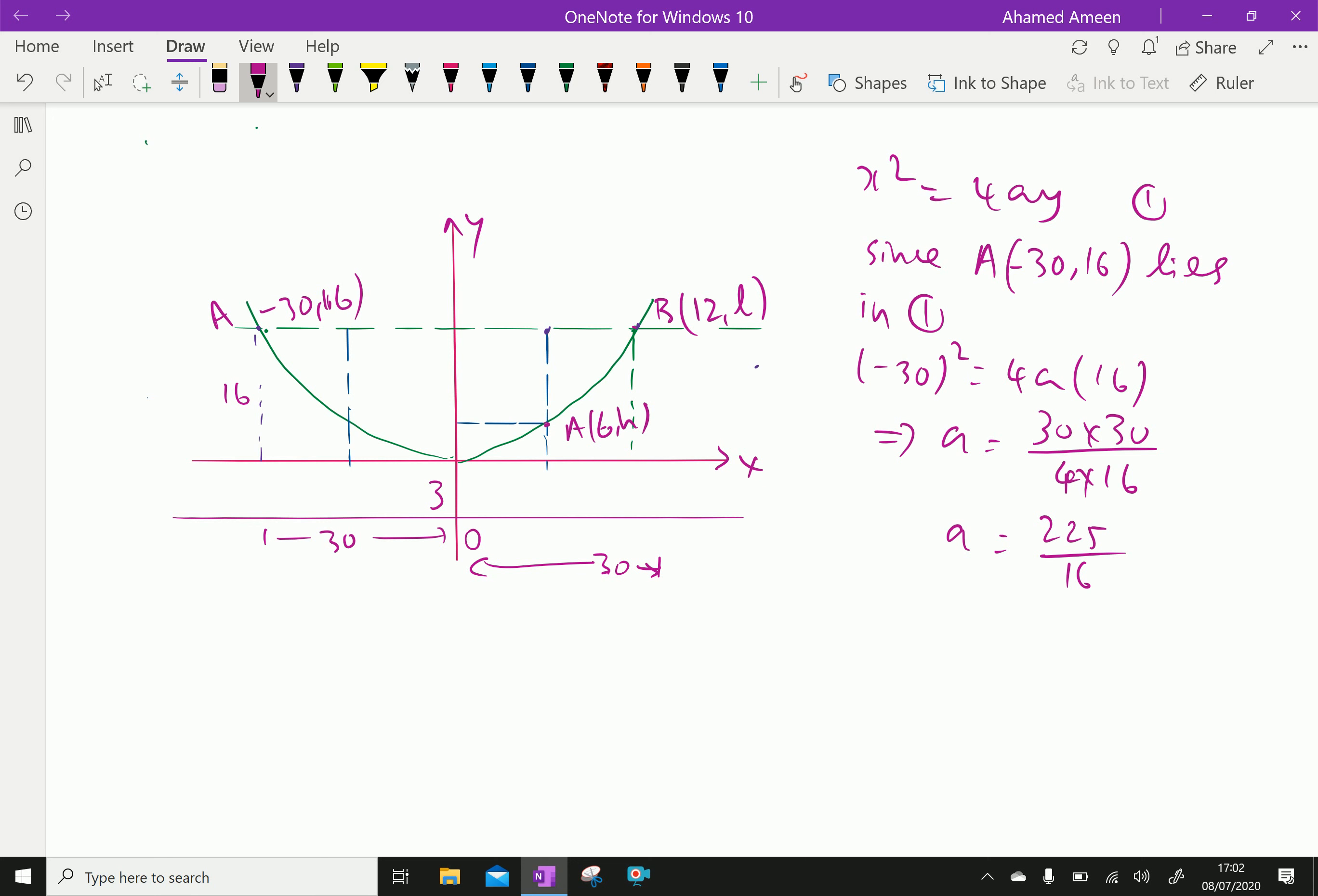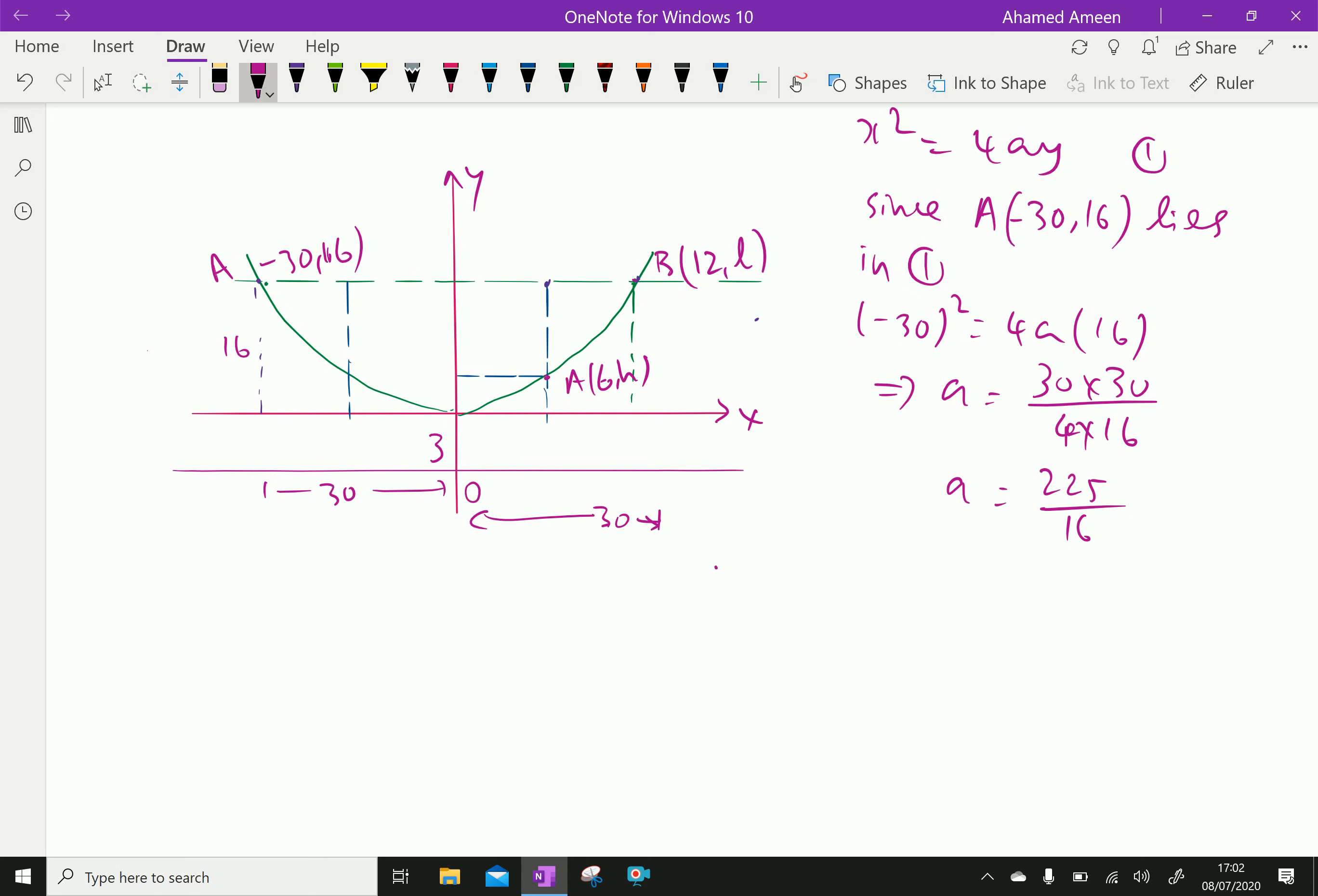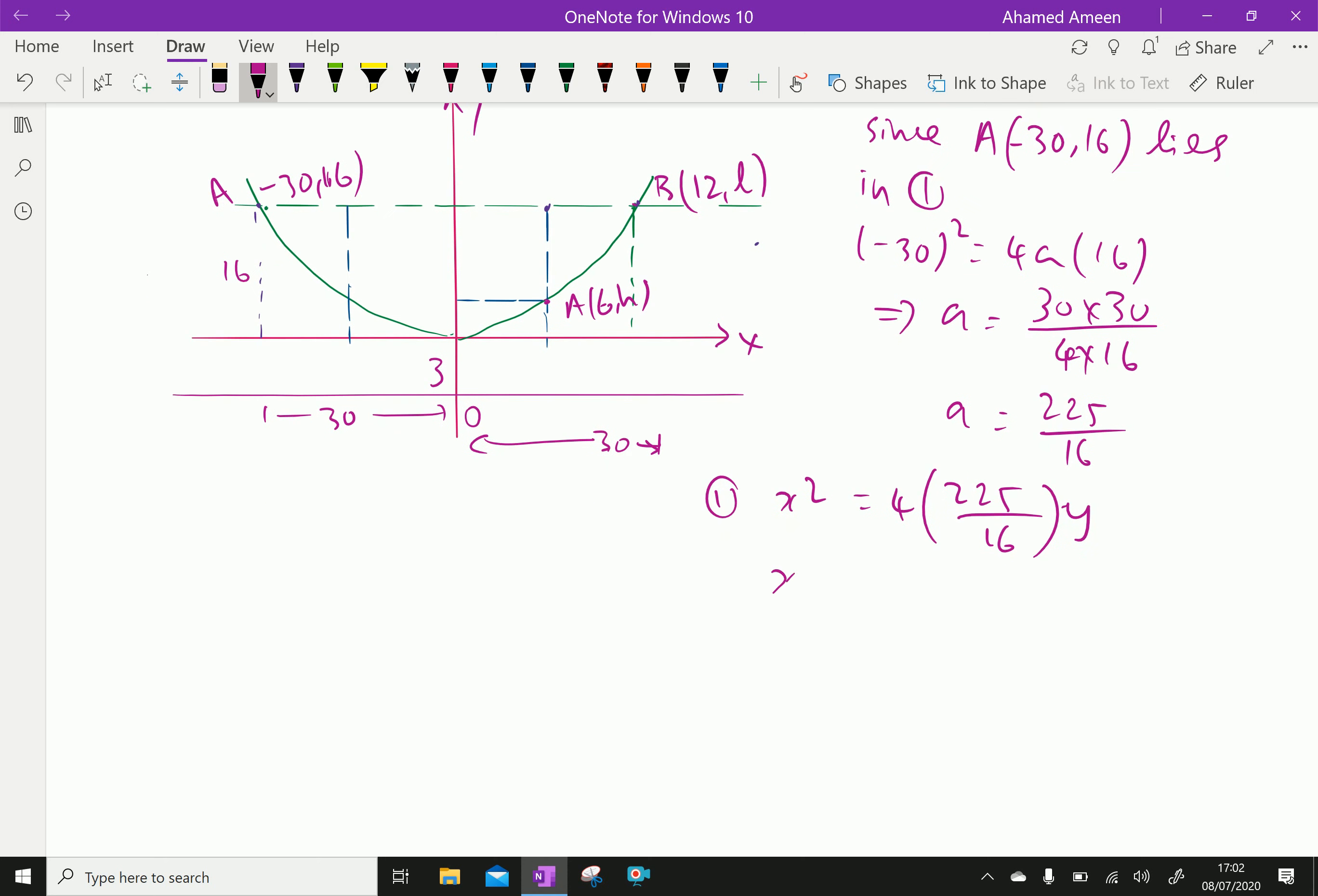Now, therefore, equation 1 becomes x square equal 4 times 225 over 16 times y. Further, it is equal x square equal 225 over 4y. Now, here, AC equal, suppose let it be the point C.